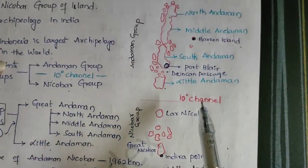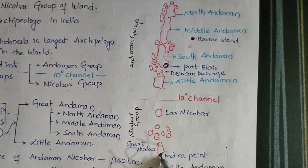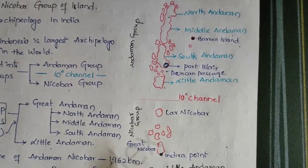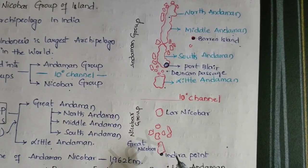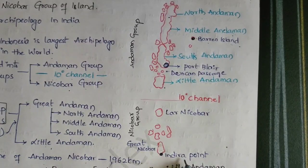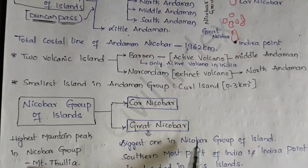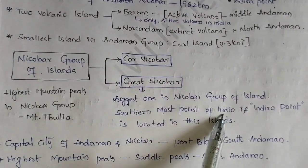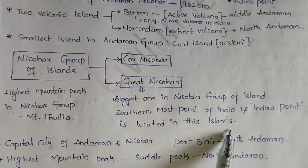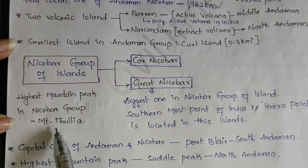In the Nicobar group, it is again divided into Car Nicobar and Great Nicobar. The Indira Point, which is the southernmost point of India, is located here. We already discussed this in our first video. The southernmost point is Indira Point, which is at Great Nicobar. Great Nicobar is the biggest island in the Nicobar group, and the highest peak in the Nicobar group is Mount Thullier.